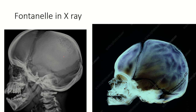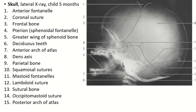The fontanelles in X-ray: this is the anterior fontanelle. In the X-ray of the 5-month-old child, the anterior fontanelle and the mastoid fontanelle are still present, while the posterior fontanelle and the sphenoidal fontanelle are obliterated.